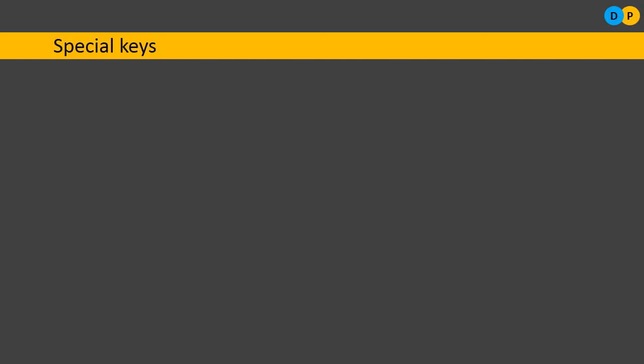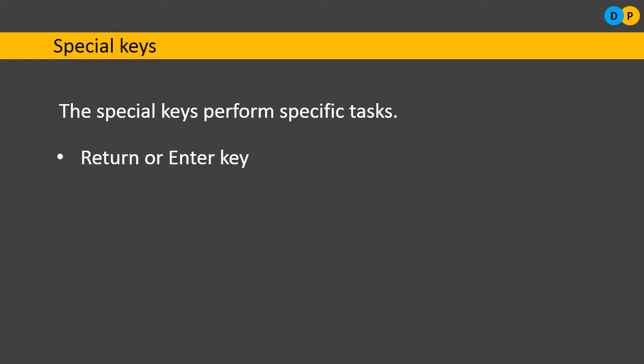Special keys are those which help us perform special activities. They are usually used in combination with other keys to perform specific tasks. For example, Ctrl+C to copy, Ctrl+V to paste, and Ctrl+X to cut. The same task can be done via the menu bar, but using key combinations is faster. Examples of special keys include the Enter key, Alt key, Tab key — which moves the cursor by 0.5 inches — Control key, Delete key, and Space Bar.